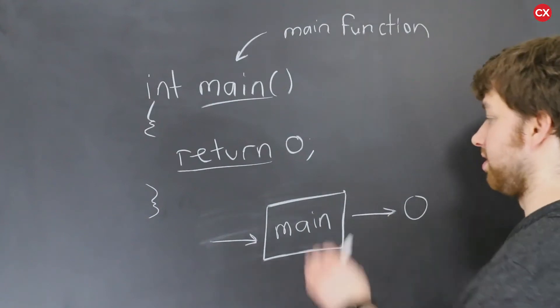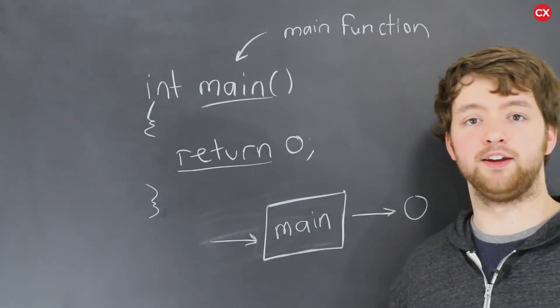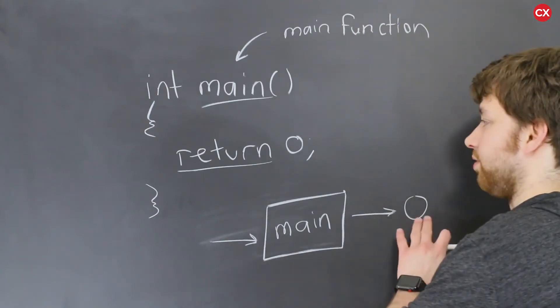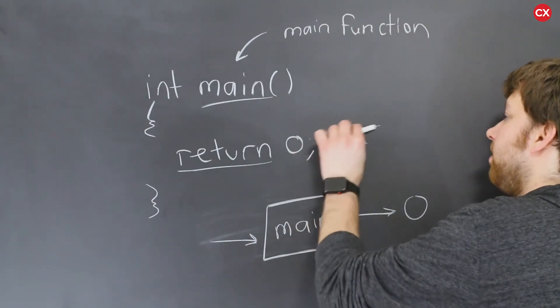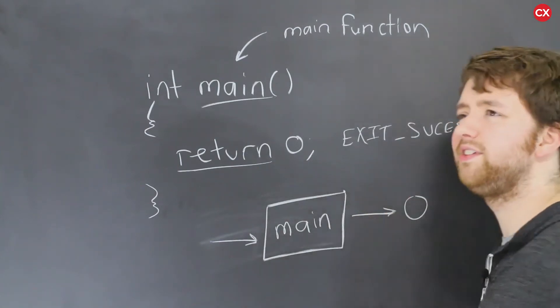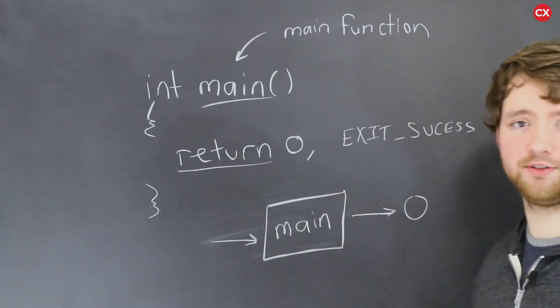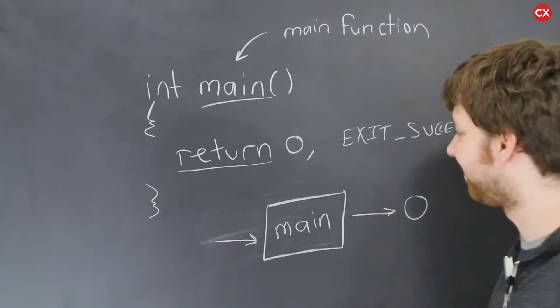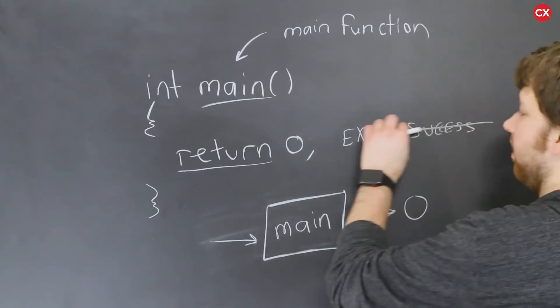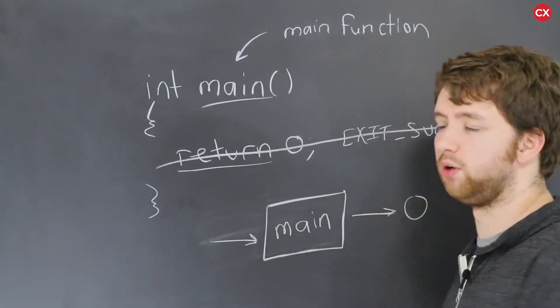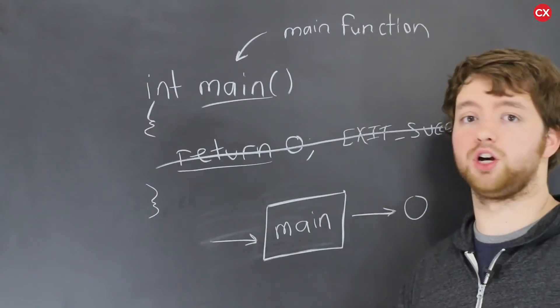So basically what happens is we turn on a machine and it says, hey, I'm done. Everything went great. So you might see return zero. You might see return exit success. Does that have one C or two? That's another thing I can't spell. No, it definitely has two. And ultimately you could even get rid of this line. If you got rid of that line, it's just going to implicitly return zero, basically nothing went wrong. So it worked.